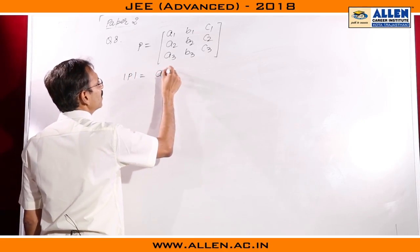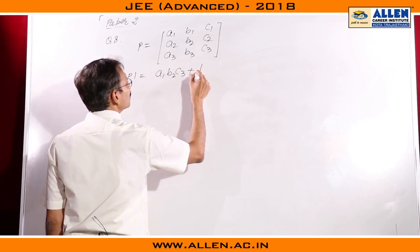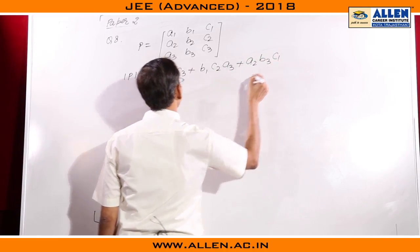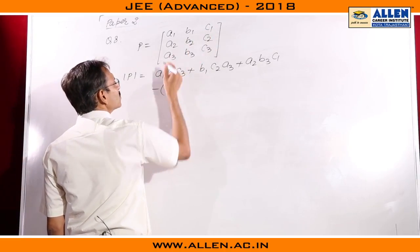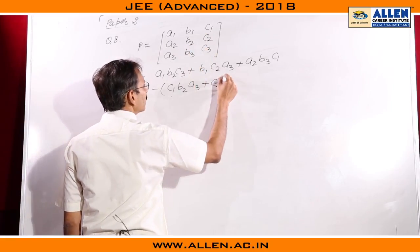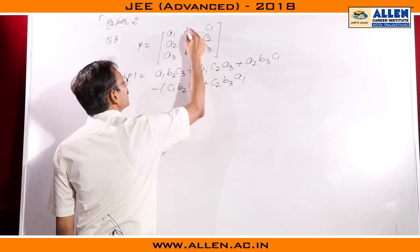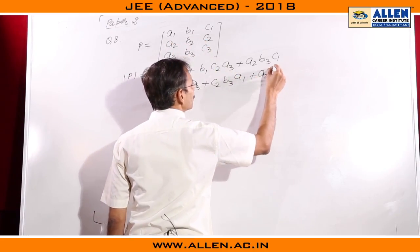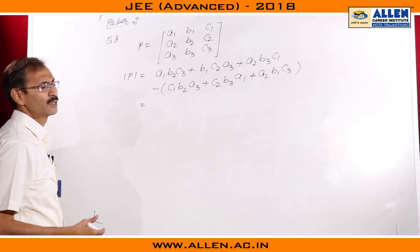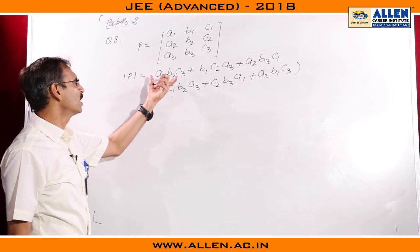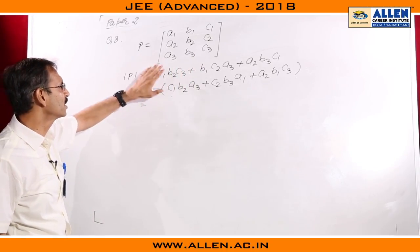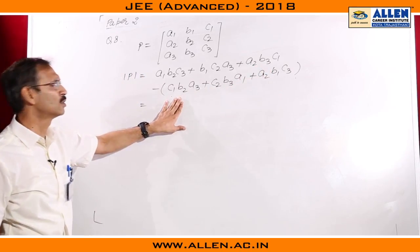Determinant P can be written as a1b2c3 plus b1c2a3 plus a2b3c1 minus the next 3 terms: c1b2a3 plus c2b3a1 plus a2b1c3. Now, we want to get the maximum value. Basic perception here is flawed because every term can be 3, minus 1 and 0. Students think that if this is 1 and this is minus 1, then maximum value is 6.